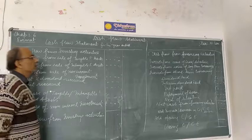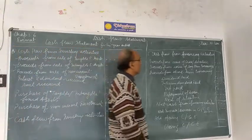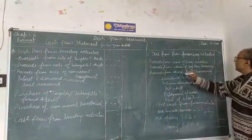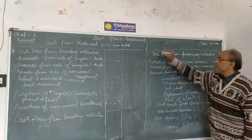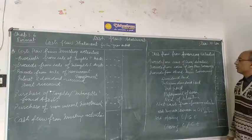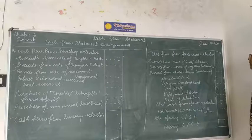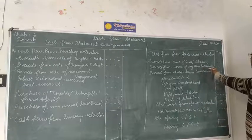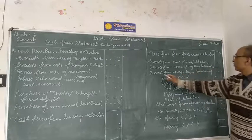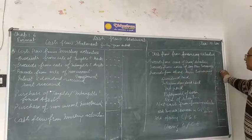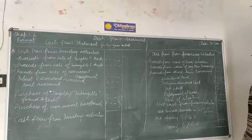Now, C point. Cash flow from financing activities. Proceeds from issue of shares and debentures, proceeds from long-term borrowings, proceeds from short-term borrowings. Short-term borrowings include bank overdraft,